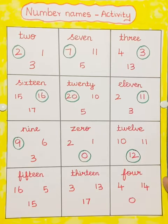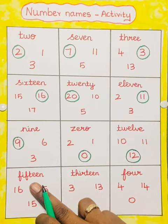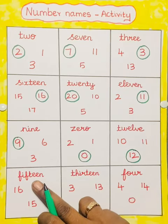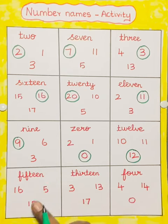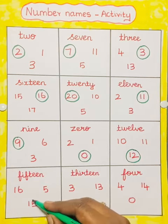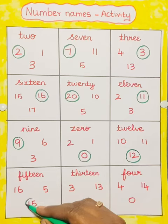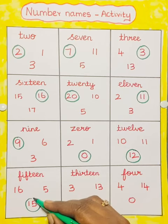Next one is 15. F-I-F-T-E-E-N. 15. This is 16, this is 5, this is 15. So we have to circle the number 15.